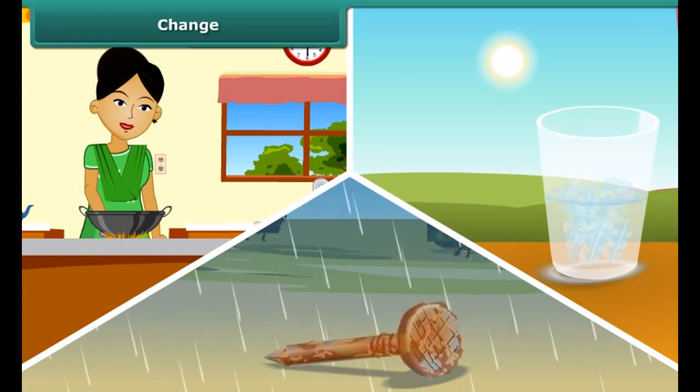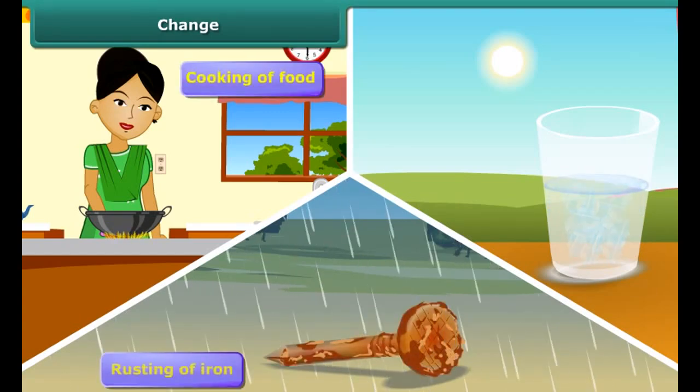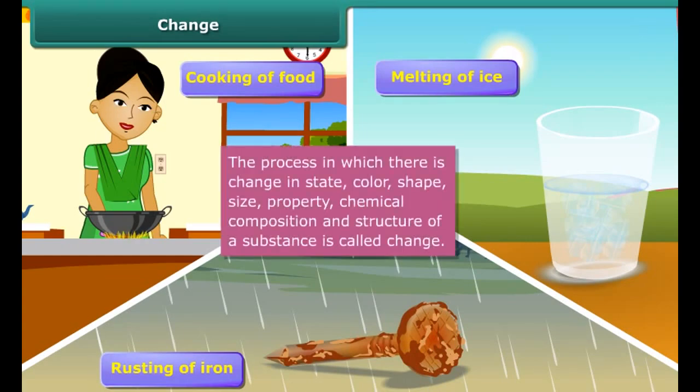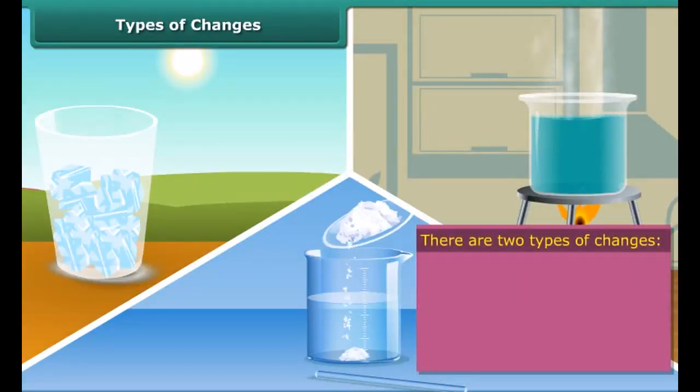We observe many changes. Some examples of changes in our daily life are cooking of food, rusting of iron, and melting of ice. Change is a process in which the properties like state, color, shape, size, chemical composition and structure of a substance is altered.